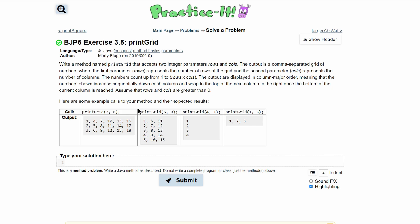For practice at exercise 3.5, print grid, we are asked to write a method named print grid. So we'll have a public static void print grid, and it accepts two integers as parameters, rows and columns. The output is a comma separated grid of numbers where the first parameter represents the number of rows of the grid, and the second parameter represents the number of columns.